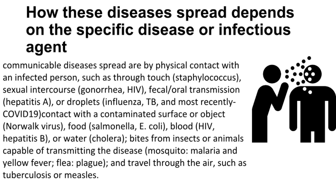Other transmission routes include contact with a contaminated surface or object (Norwalk virus), food (salmonella, E. coli), blood (HIV, hepatitis B), or water (cholera). Bites from insects or animals capable of transmitting the disease, such as mosquitoes (malaria and yellow fever) or fleas (plague), and travel through the air, such as tuberculosis or measles.